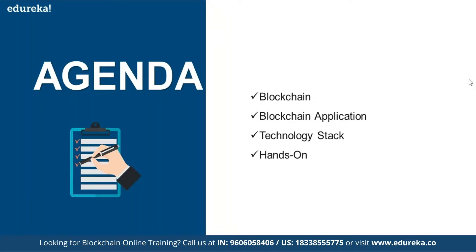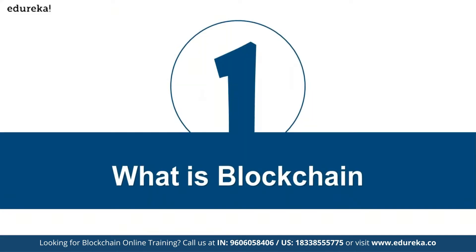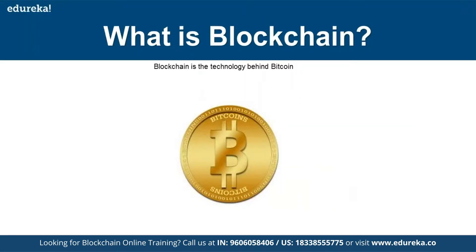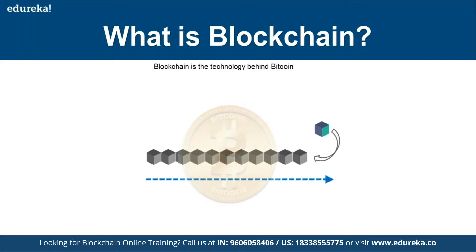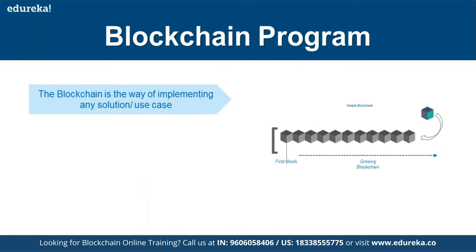So let's talk about what is a blockchain. Blockchain is a technology which was basically introduced by Bitcoin. People end up creating a number of blocks which are chained together — every block is attached to the next one. Your first block starts and the blockchain continues to grow, and every block contains the information of the start and the end of that block.